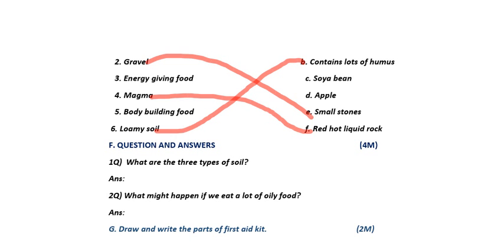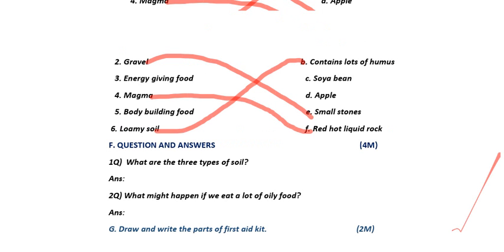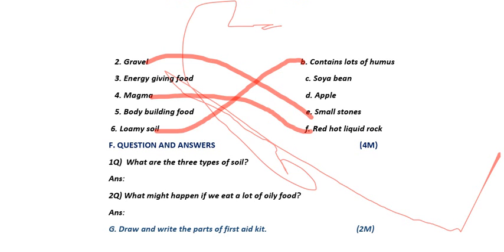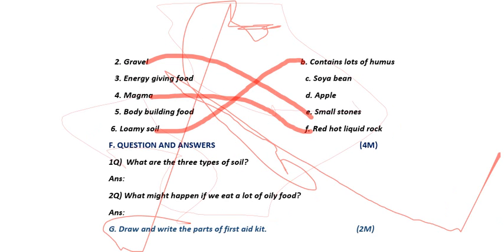Next, energy giving food, body building food, and protective food are listed. On the other page the answers include rice, apple, and other items. Energy giving food — the answer is rice, so that is option A. Protective food — the answer is apple, that is option D.